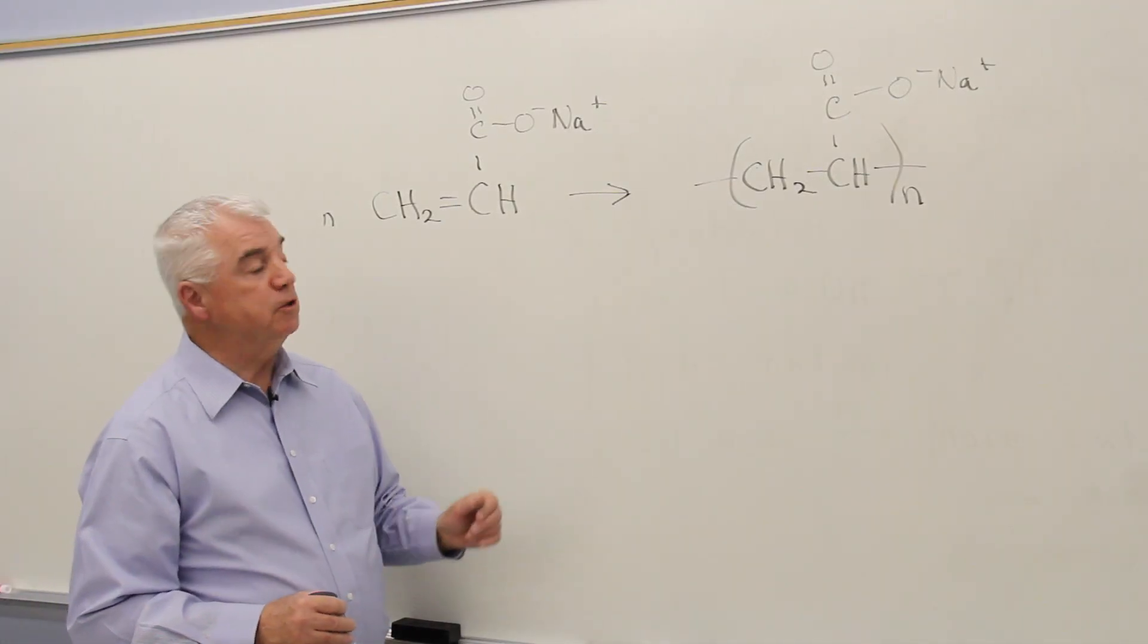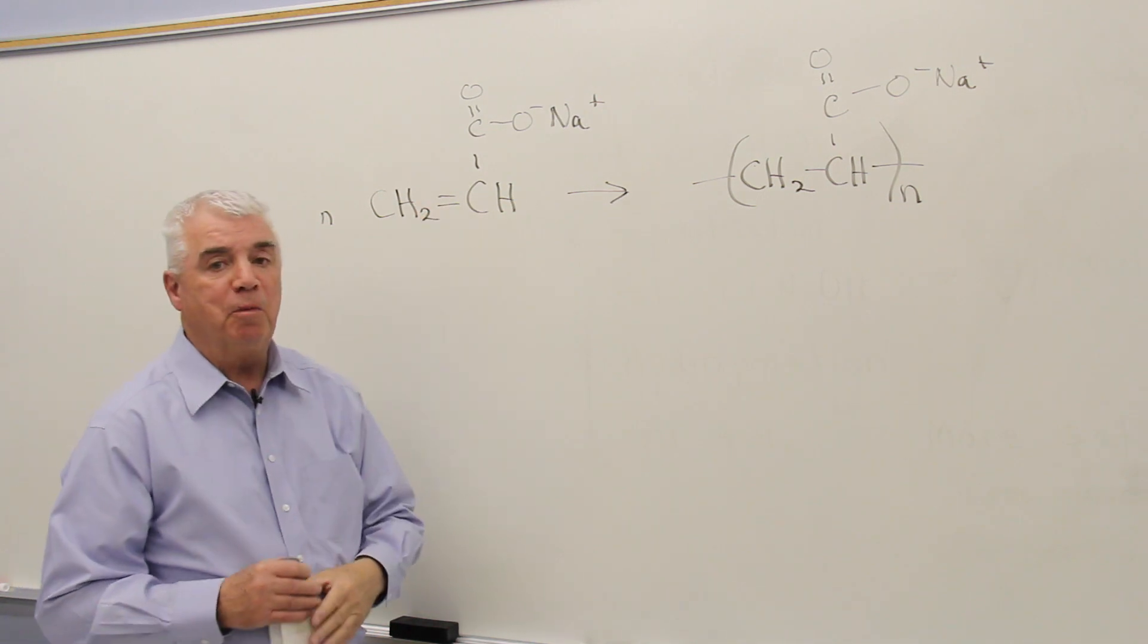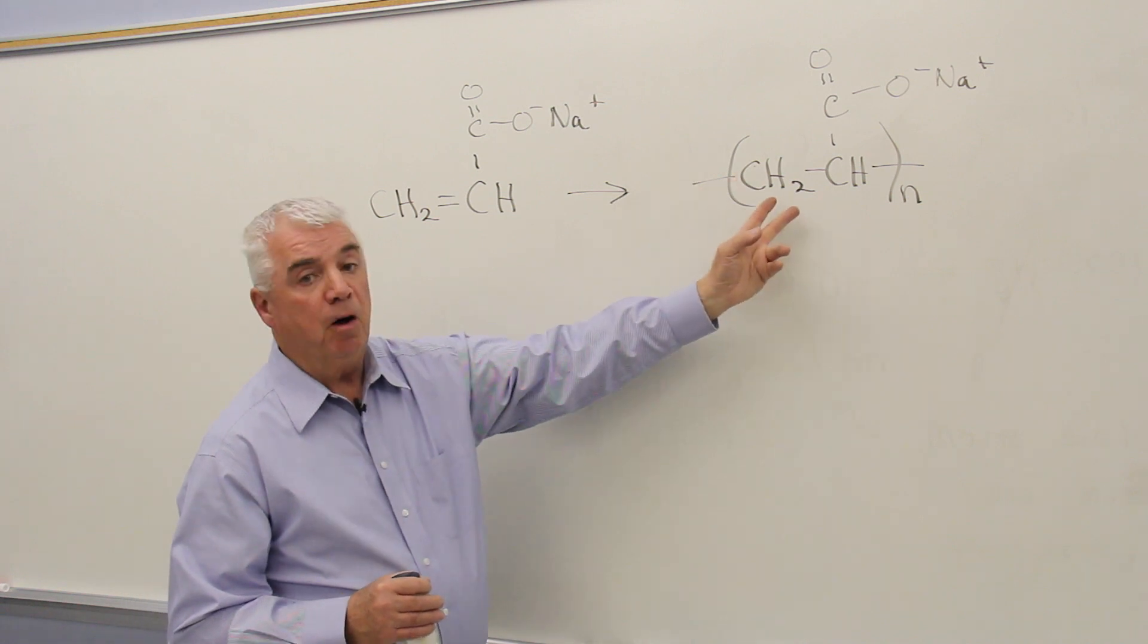In the reactions of alkenes, we've learned that when we have a molecule with a carbon-carbon double bond, it's possible to polymerize those substances and get a polymer.